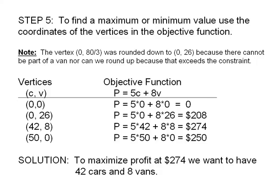At this point, we just select the best answer, which is a profit of 274 dollars. Since that was for the point 42 and 8, that means we want to have 42 cars and 8 vans, which will maximize our profit.